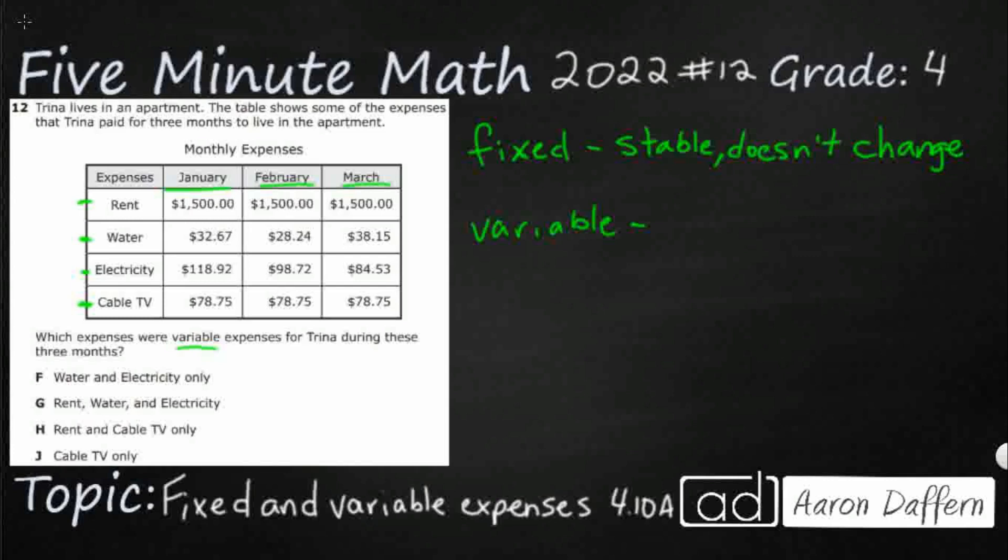So variable then are going to be the opposite. They're going to be unstable and that means they are going to change. And in this case they're going to change based on usage. And that's kind of the way to tell the difference between the two.